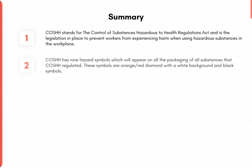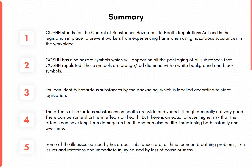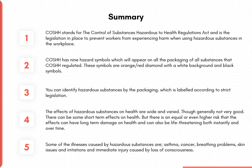Summary. COSHH stands for the Control of Substances Hazardous to Health Regulations Act and is the legislation in place to prevent workers from experiencing harm when using hazardous substances in the workplace. COSHH has nine hazard symbols which appear on all packaging of COSHH-regulated substances — these symbols are orange or red diamonds with a white background and black symbols. You can identify hazardous substances by the packaging, which is labelled according to strict legislation. The effects of hazardous substances on health are wide and varied. There can be some short-term effects, but there is an equal or even higher risk that the effects can cause long-term damage and can be life-threatening both instantly and over time. Some of the illnesses caused by hazardous substances include asthma, cancer, breathing problems, skin issues and irritations, and immediate injury caused by loss of consciousness.